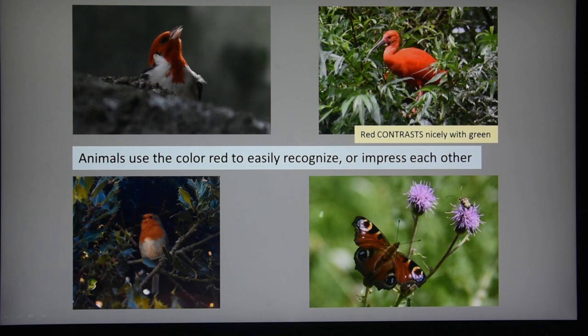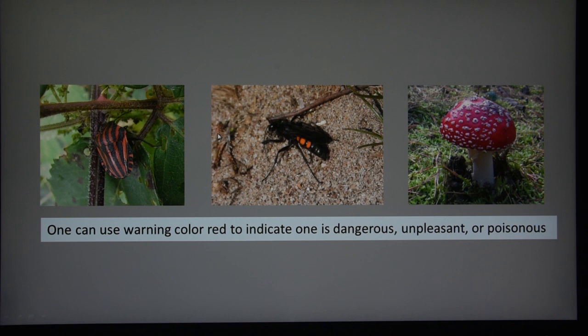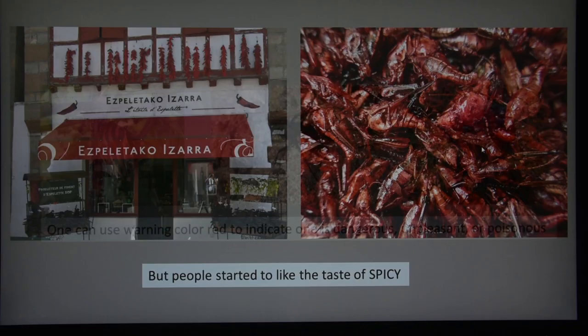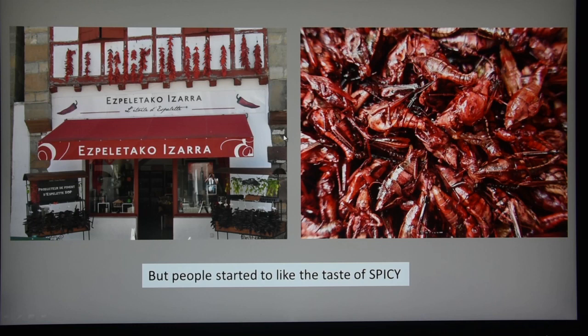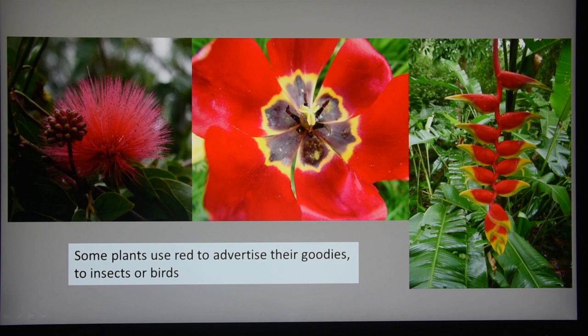Animals don't just use red to attract or impress their own species, but also to indicate that they may be poisonous or dangerous. For example, this is a quite poisonous mushroom — don't eat it. Also spicy things are not supposed to be eaten, but we developed a taste for them, like here you see in Espelette, the pepper village, you see them drying. Or here the locusts which have been colored red also with some spices. Flowers also use the color red — here you see very nice patterns on the flower, particularly for insects to find where they should land to collect some pollen.